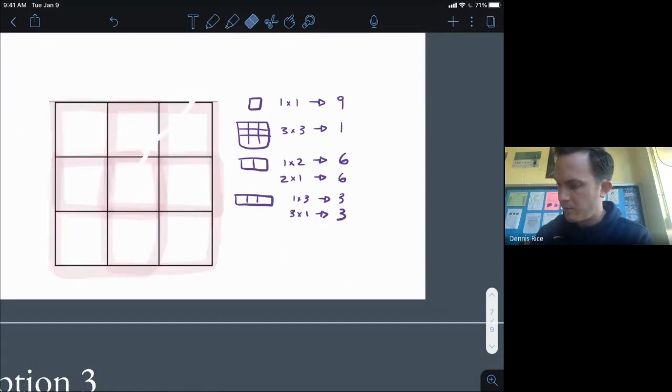Two by twos, so we have like the little blocks that we had in the second step. We have one, we have two, we have three, and we have four all together. We have four of them. Two by twos, we have four.